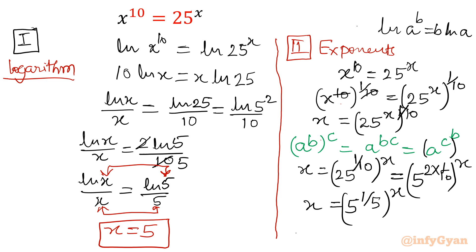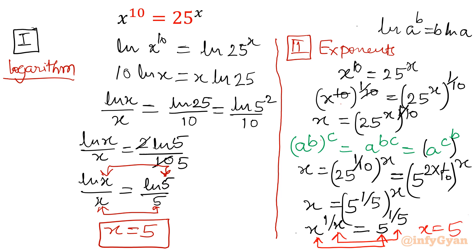Taking both sides to the power 1 over x, we get x power 1 over x equal to 5 power 1 over 5. Comparing both sides gives the same solution from exponent properties as from logarithms: x equal to 5. So x equal to 5 is the one solution algebra and these methods reveal directly.